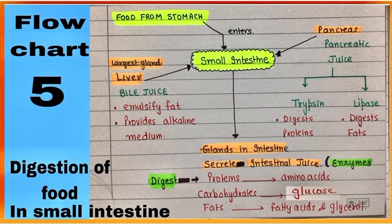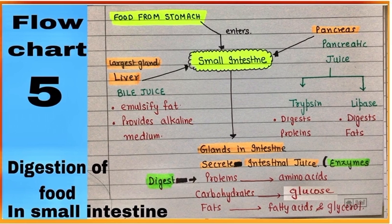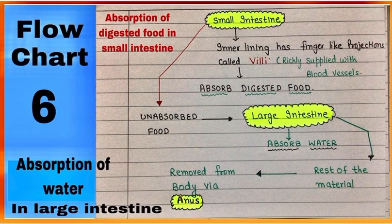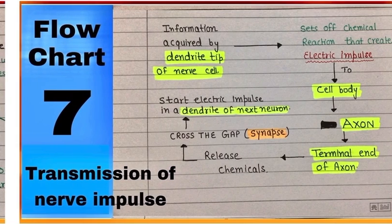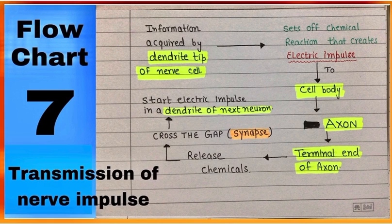Flowchart number six is about absorption of digested food by the small intestine and absorption of water by the large intestine. Flowchart number seven is showing transmission of nerve impulse from the dendrite of one neuron to the dendrite of the next neuron.